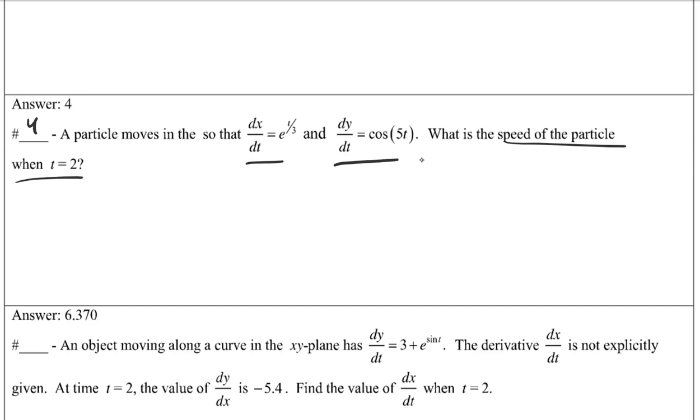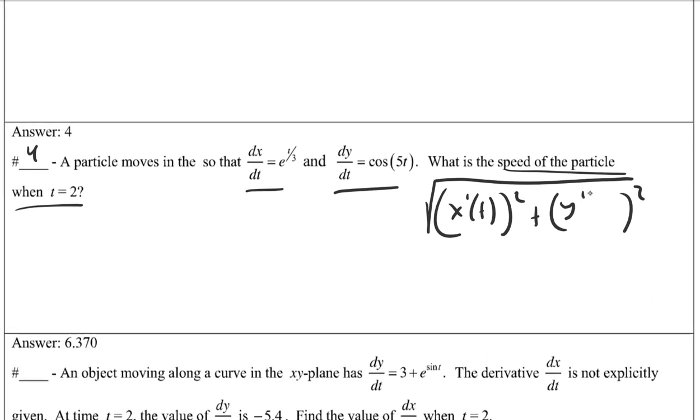So essentially, this is just going to be like Pythagorean theorem. We're going to take the square root of each of those squared: the derivative of x with respect to t, the derivative of y with respect to t, each one squared and added together.